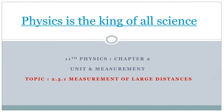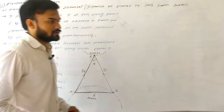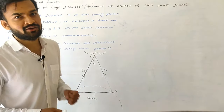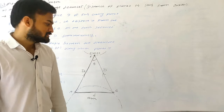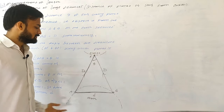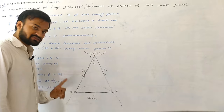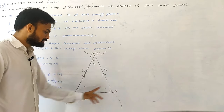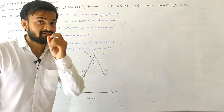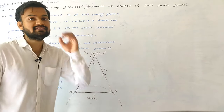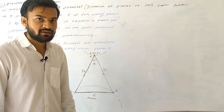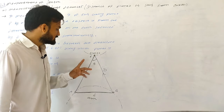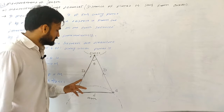Now let's see how to measure the distance D of a far-away planet from Earth using the parallax method. First, we observe planet P from two points A and B on Earth simultaneously. The separation between these two points on Earth, AB, is equal to small d. We then measure the angle theta — the angle between the two directions of observation along which the planet is viewed.